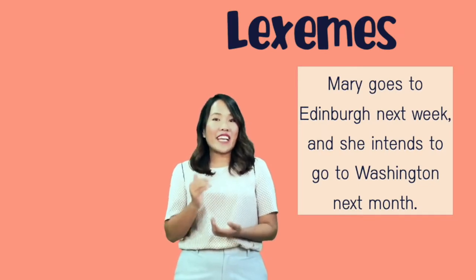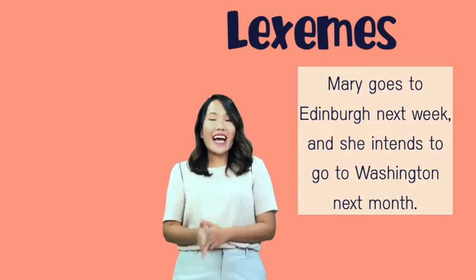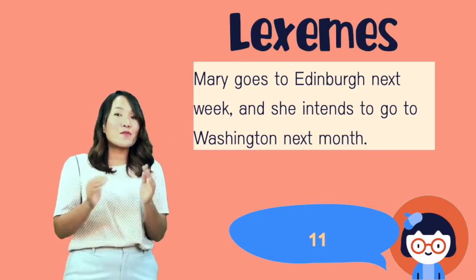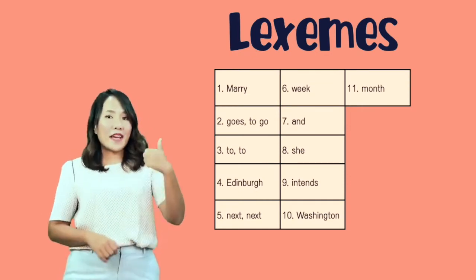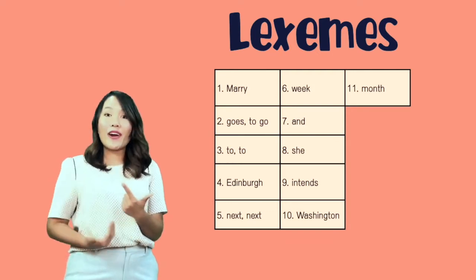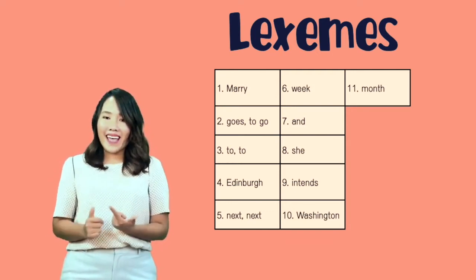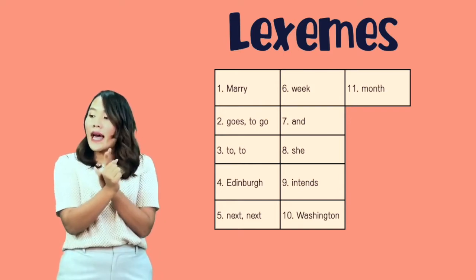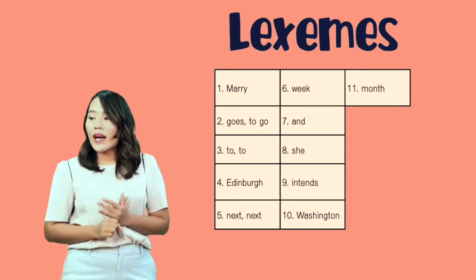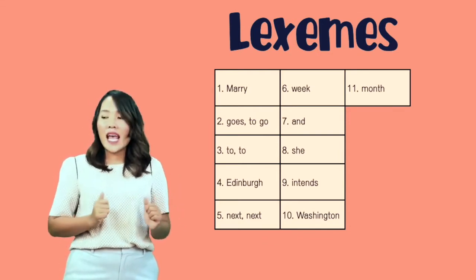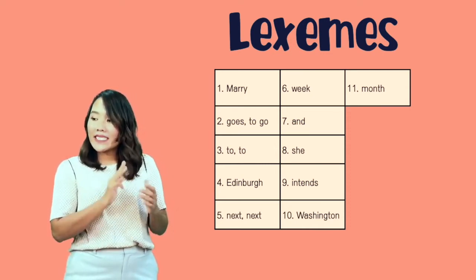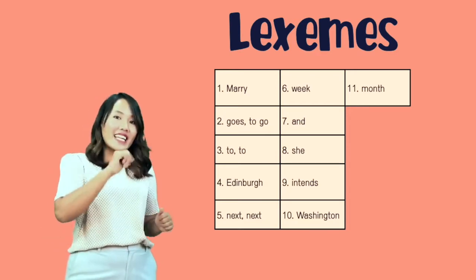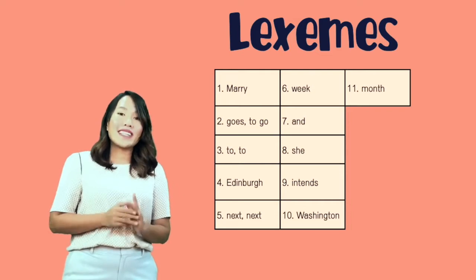In 'Mary goes to Denver next week and she intends going to Washington next month,' counting by lexeme gives us 11 words: Mary (1), goes/going = one lexeme go (2), to counted once (3), Denver (4), next counted once (5), week (6), and (7), she (8), intends (9), Washington (10), month (11).